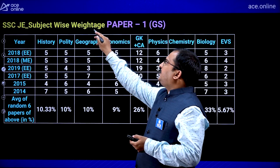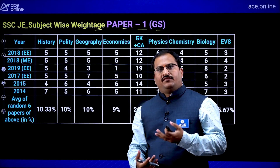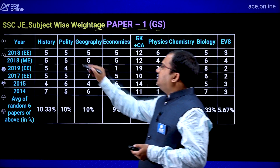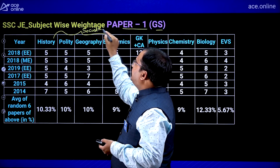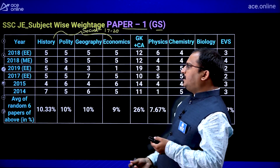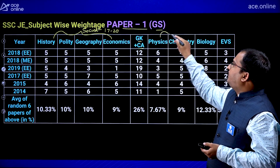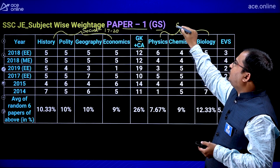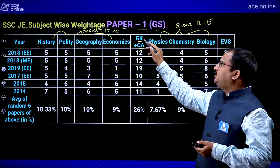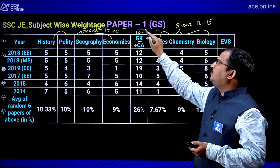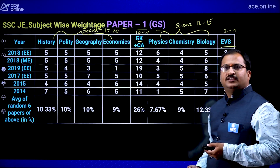Coming to the subject-wise weightage in Paper 1 General Awareness part — based on randomly collected data from different papers: Social Studies carries 17 to 20 marks; General Knowledge and Current Affairs around 10 to 14 marks; Science (Physics, Chemistry, Biology) 12 to 15 marks; and Environmental Studies 2 to 4 marks.